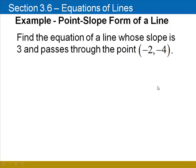Find the equation of a line whose slope is 3 and passes through the point (2, 4). We're going to begin with the equation y equals 3x plus b because the slope was 3.